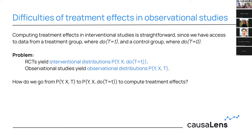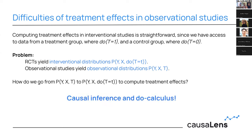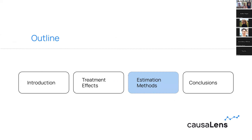Computing treatment effects for interventional studies is straightforward, as I showed earlier: simply take the difference in outcomes between groups. RCTs directly yield interventional distributions p(Y, X | do(T)), whereas observational studies yield observational distributions p(Y, X, T). What we need in order to compute the expectations in the treatment effect equations is the interventional distribution — and the question is how to go from observational to interventional. The answer is causal inference and the do-operator.